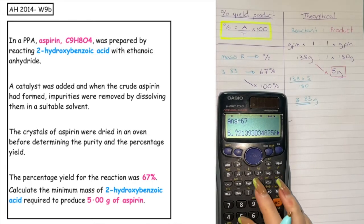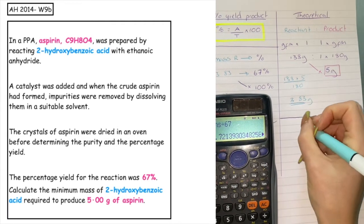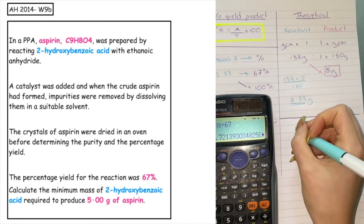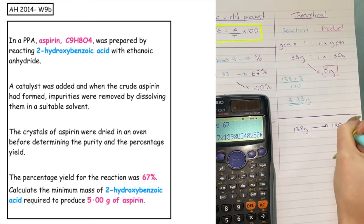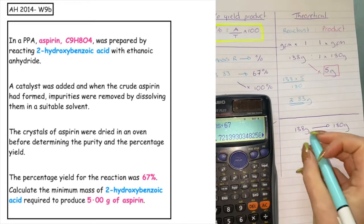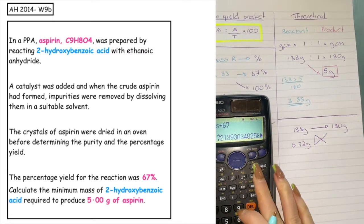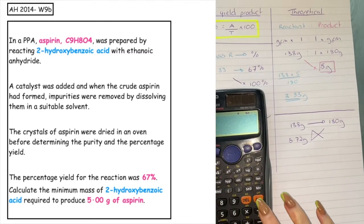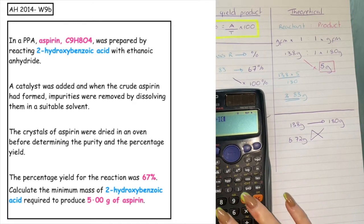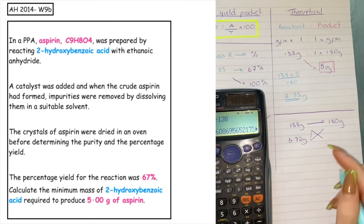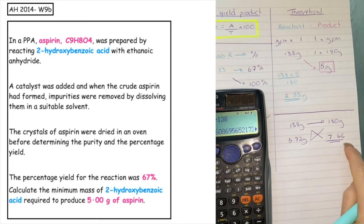To verify this is correct, we take all the information and substitute it into the percentage yield calculation. From the ratio: 138 grams of reactant would produce 180 grams of aspirin. If we take our 5.72 grams and proportionalise to see how much product we'd make: 180 times 5.72 divided by 138 gives a mass of 7.46 grams. That would be our theoretical yield of product.